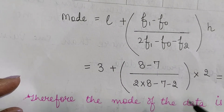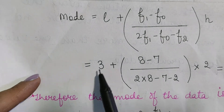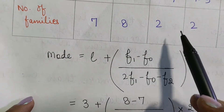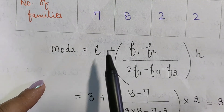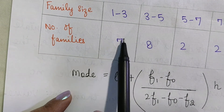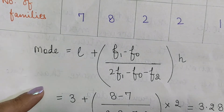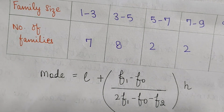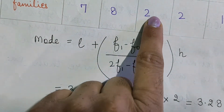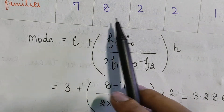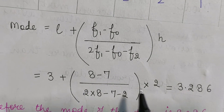Using the formula for this table: l = 3, f1 = 8, f0 = 7 (the class preceding the modal class), f2 = 2 (the class succeeding the modal class), and h = 2 (the class interval). We plug these values in to calculate the mode.